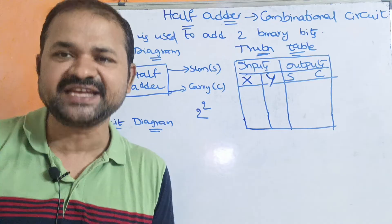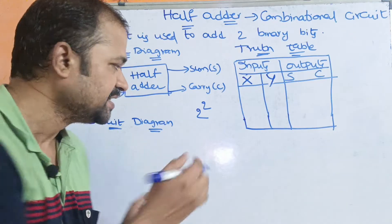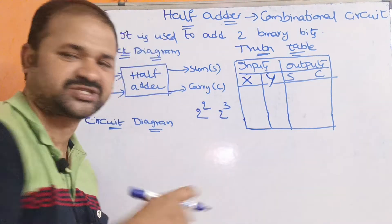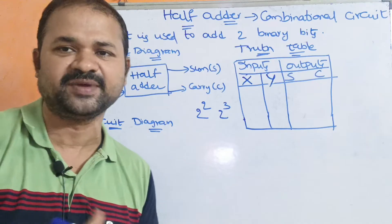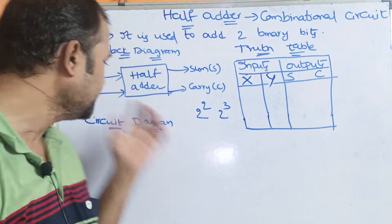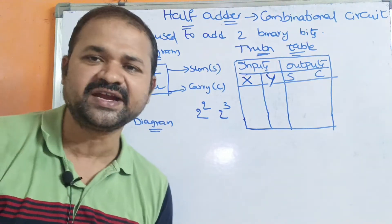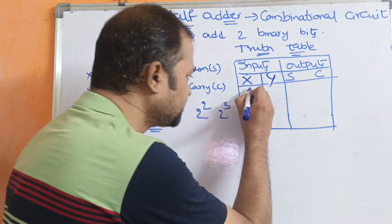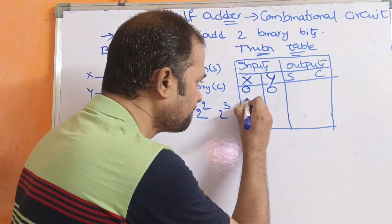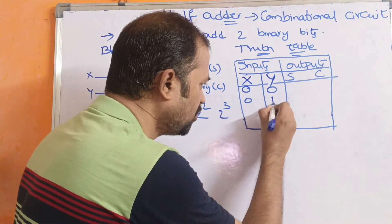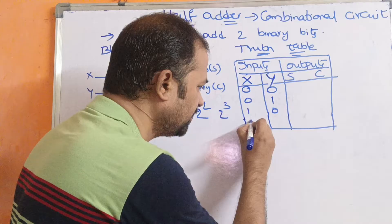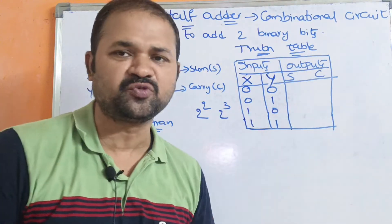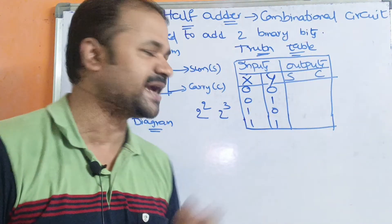For reference, if there are three inputs, then we will get 2 power 3, which is 8 combinations. Here we have two bits, so we will get four combinations: 00, 01, 10, and 11. It produces two outputs: sum and carry.